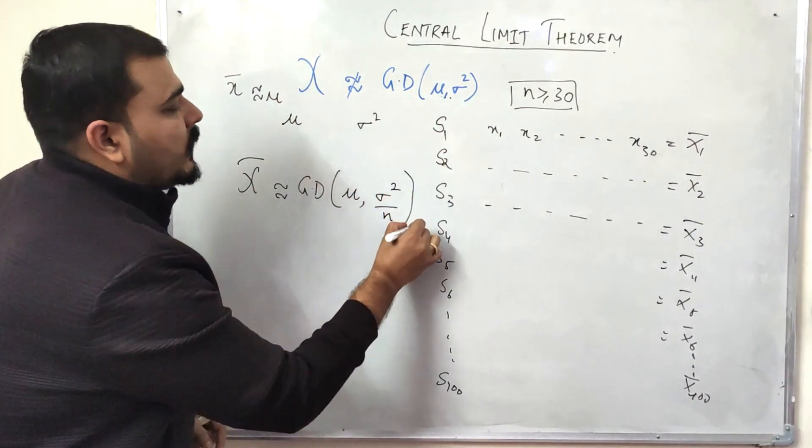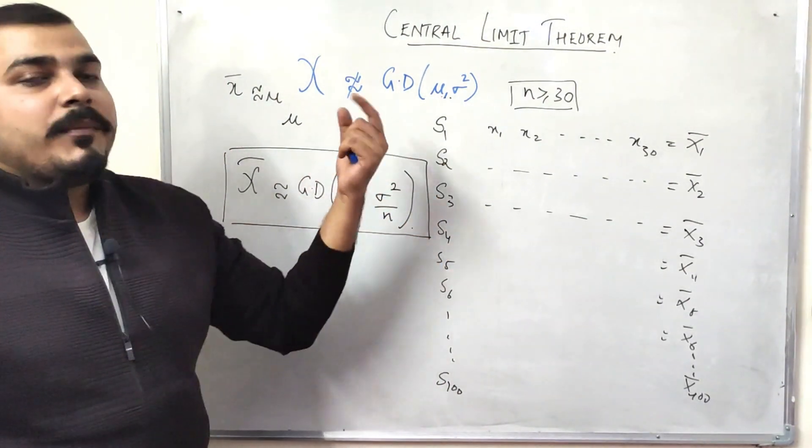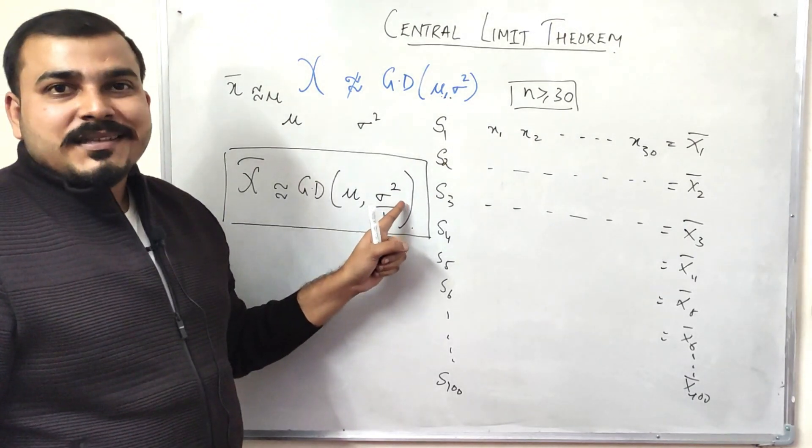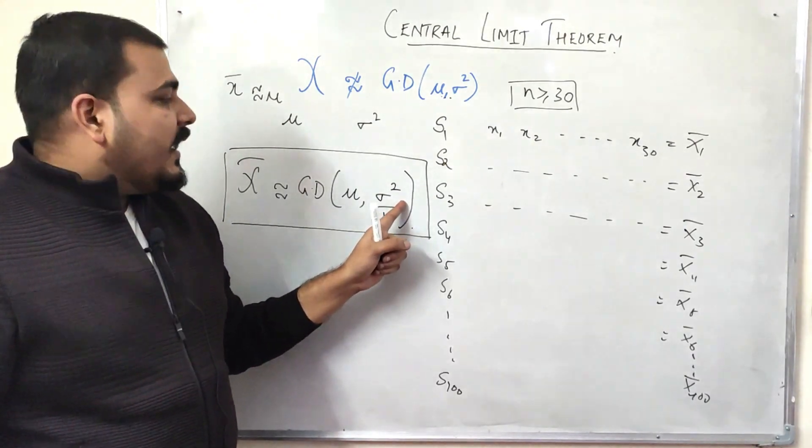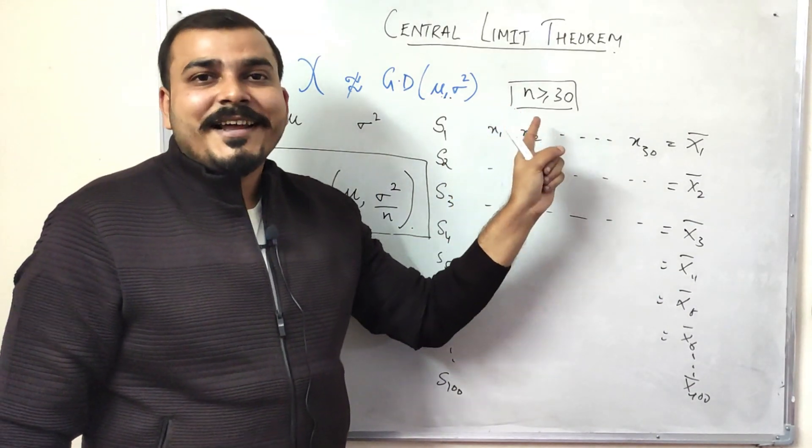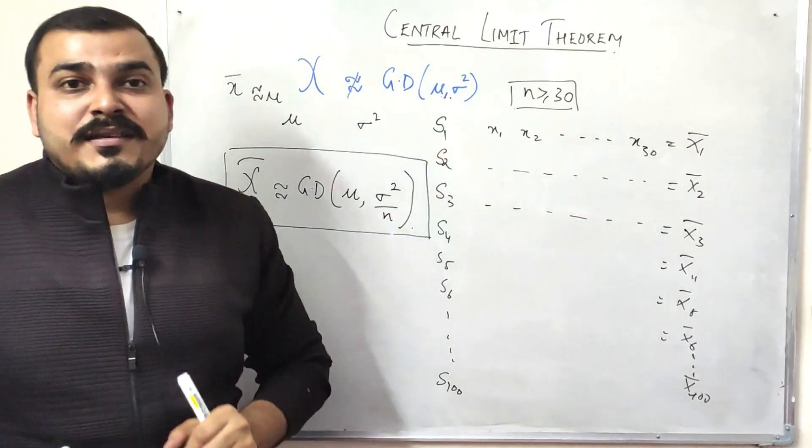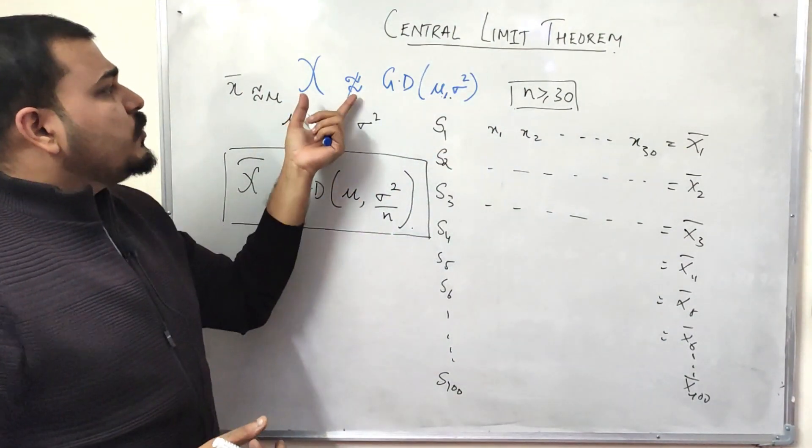Now, this σ² is my variance and it will be divided by n, where the condition is that n should be greater than or equal to 30.